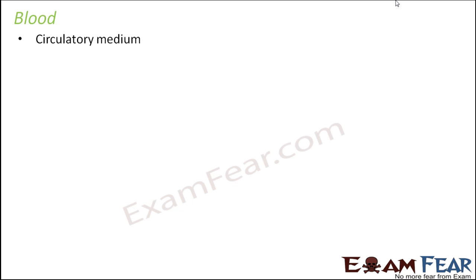We all know what blood is — when you get a cut, a red colored fluid comes out of your wound, and that is blood. Blood is the circulatory medium; it essentially rules the entire circulatory system because it is the medium through which substances get circulated throughout the body. It is a fluid connective tissue.